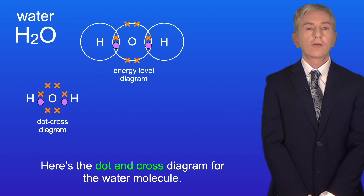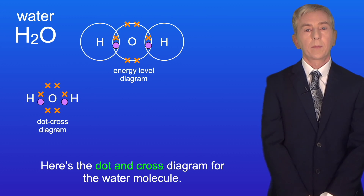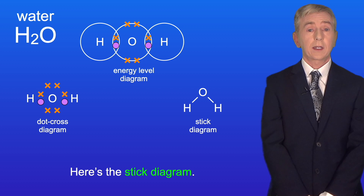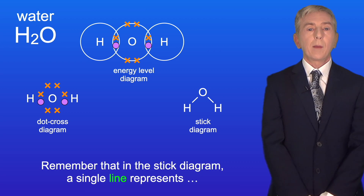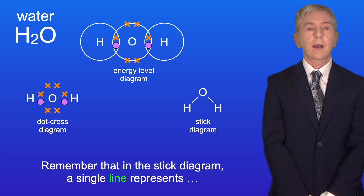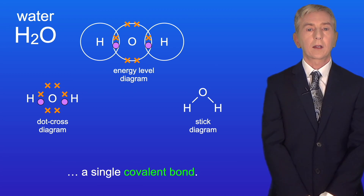Here's the dot and cross diagram for the water molecule, and here's the stick diagram. Remember that in the stick diagram a single line represents a single covalent bond.